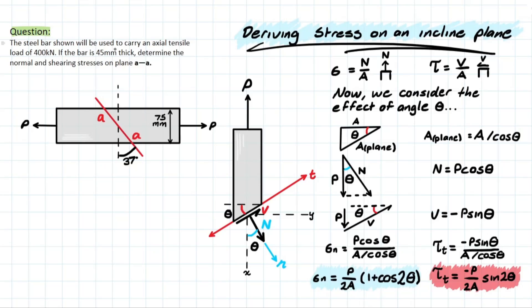So we have the steel bar shown below, which is used to carry an axial tensile load of 400 kilonewtons. If the bar is 45 millimeters thick, we're asked to determine the normal and shear stress for plane AA, which is this section taken from the metal rod at a 35 degree angle with respect to the y-axis.